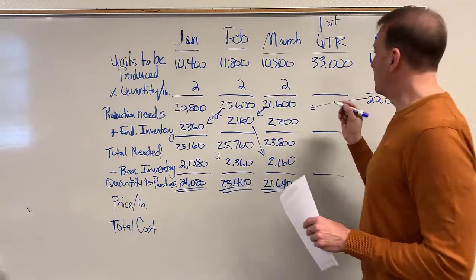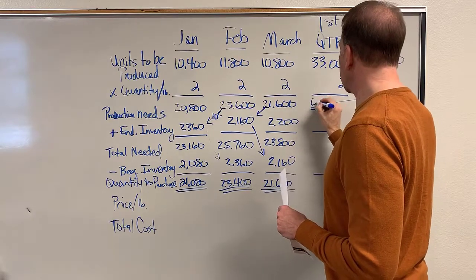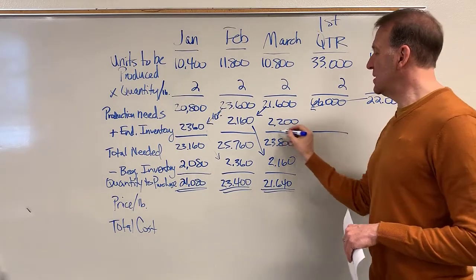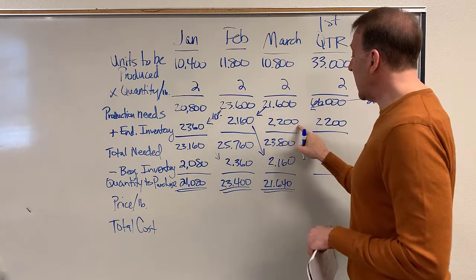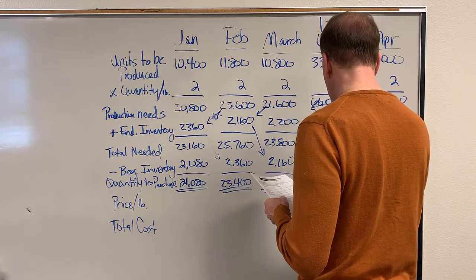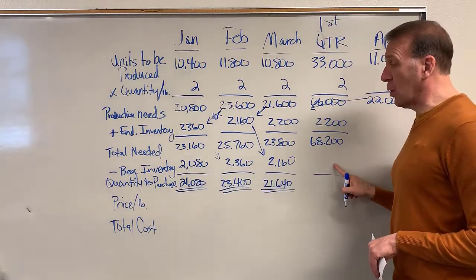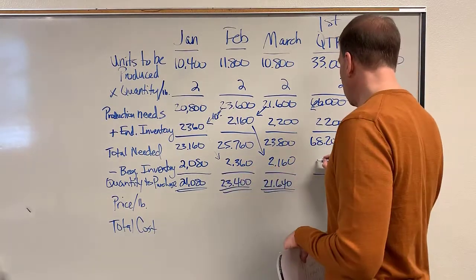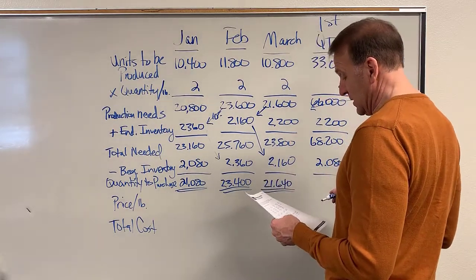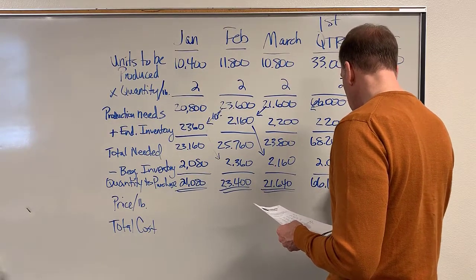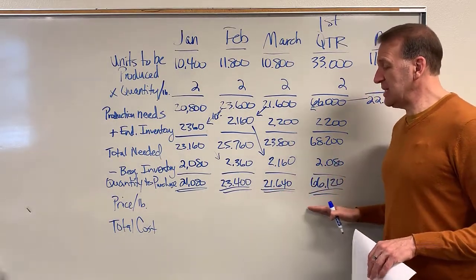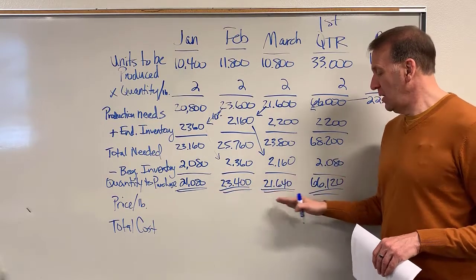Now let's finish up the quarter totals. Two pounds times 33,000 units gets us 66,000 pounds. Our first quarter ending inventory is 2,200 — that's the ending inventory for the quarter. So that gets us 68,200 for the quarter. Our beginning inventory for the quarter is 2,080. So now we have the pounds of potatoes we need to purchase by month and for the quarter in total.